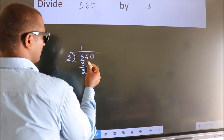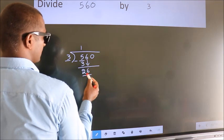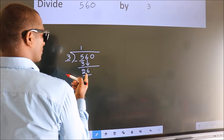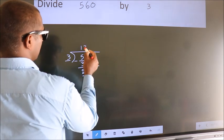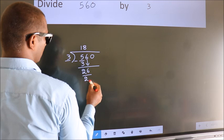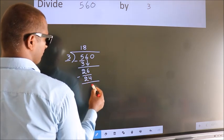After this, bring down the beside number. So 6 down. So 26. A number close to 26 in 3 table is 3 times 8, 24. Now we subtract. We get 2.